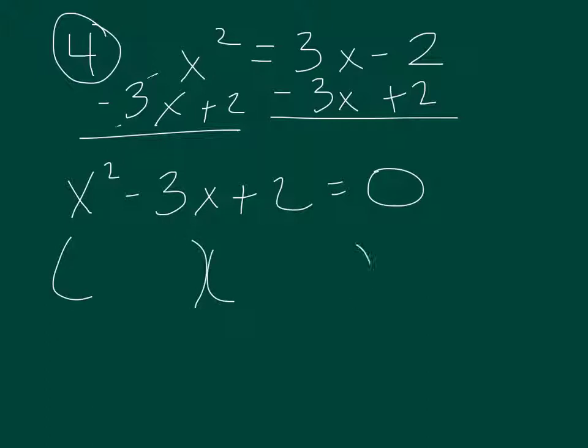And then you factor x squared, so x and x. You have 2. So 2 and 1 to make a negative 3. They both need to be negative. So negative 2, negative 1. Set them both equal to 0.